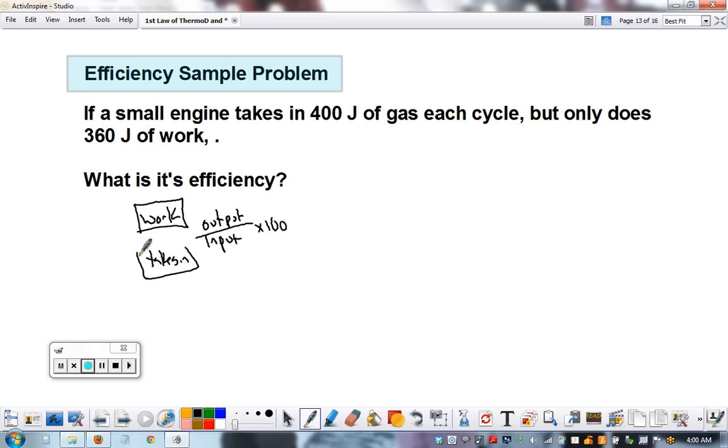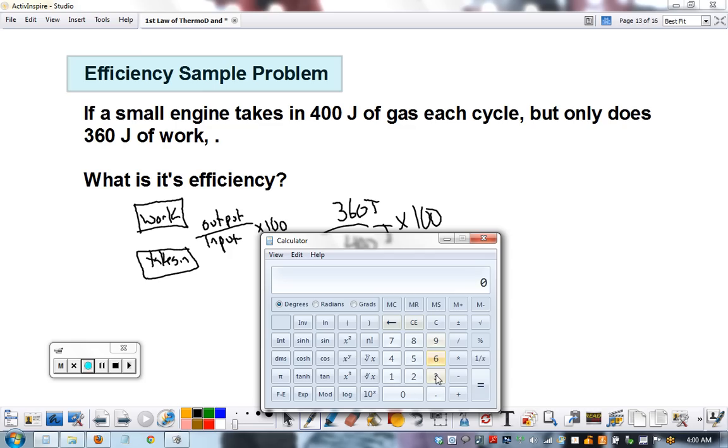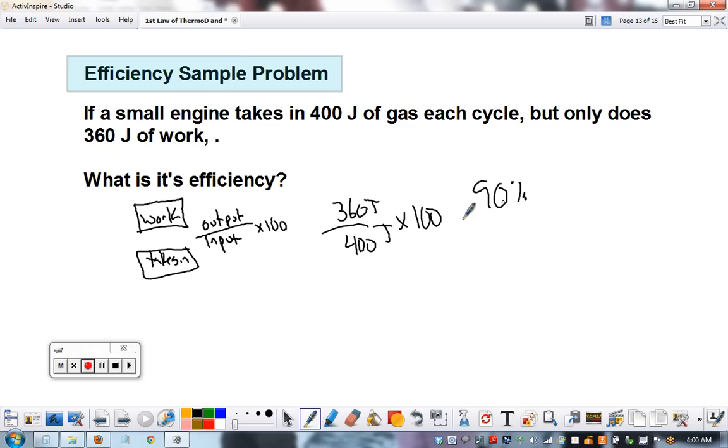It's 360 divided by 400 times 100. Let's calculate: 360 divided by 400 equals, times 100, equals 90 percent. The joules cancel out and when we're doing efficiency we're only left with a percentage.